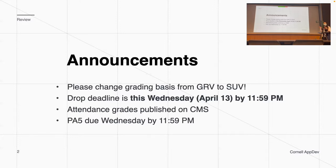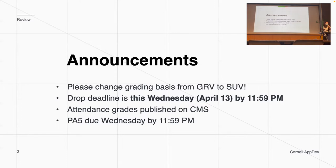The deadline for changing your grading basis is this Wednesday by 11:59pm. This is a very hard deadline set by your registrar, so just do it as soon as possible. And if you haven't received an email warning from us about it, you should be fine.